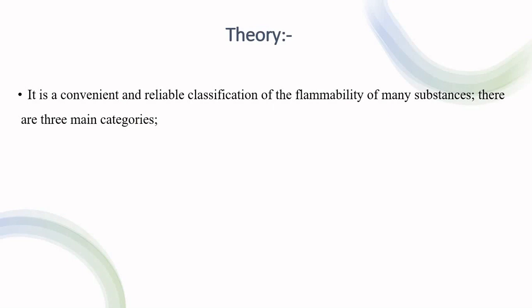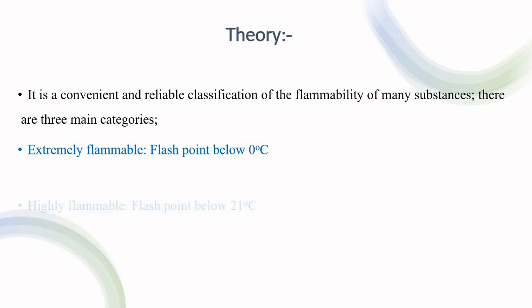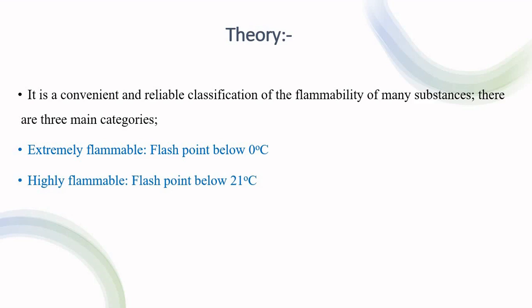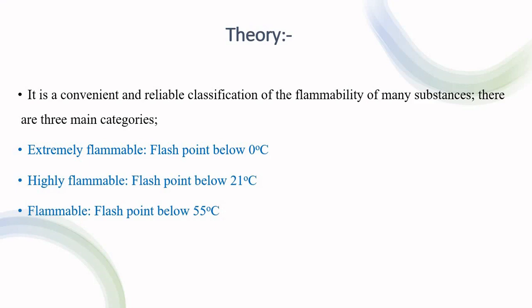There are 3 main categories according to flammability: one is extremely flammable, which has a flashpoint below 0 degrees Celsius; then highly flammable, which has a flashpoint below 21 degrees Celsius; and flammable, that is a flashpoint below 55 degrees Celsius.